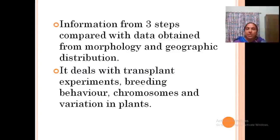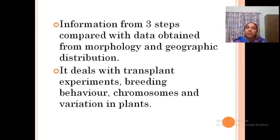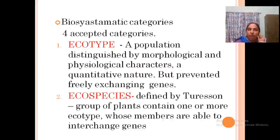Data from transplant experiments, breeding behavior, chromosomes, and variation in plants are all consolidated. There are four categories in biosystematics. The first is ecotype: a population distinguished by morphological and physiological characters but in which the exchange of genes is prevented.